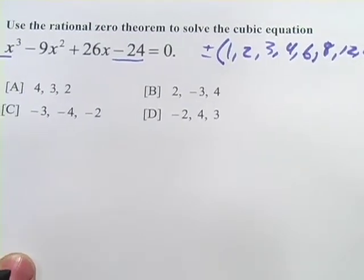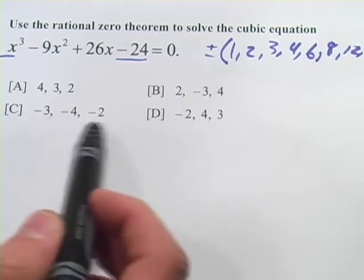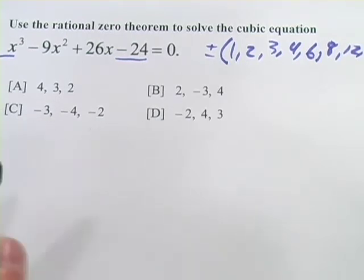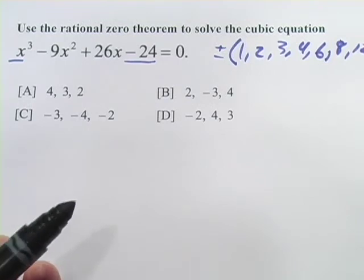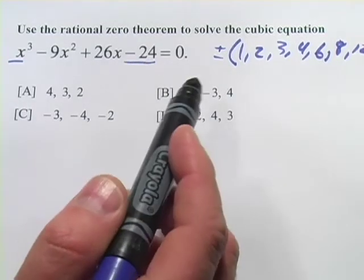Now, if we take a glance at our answer choices, this doesn't seem to have helped us too much. They all have 2 and 3 and 4 in various combinations. So the way to think about this is, how are you getting a negative 24 for your constant term?